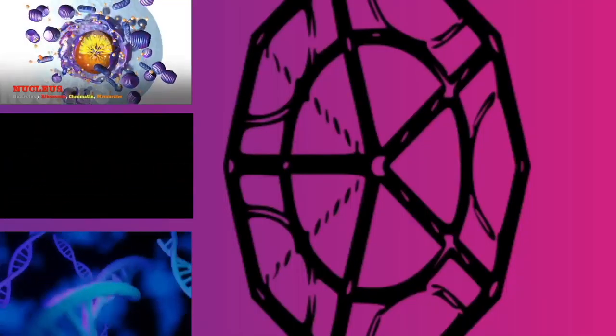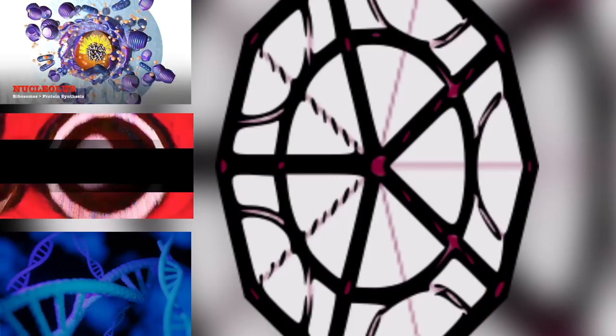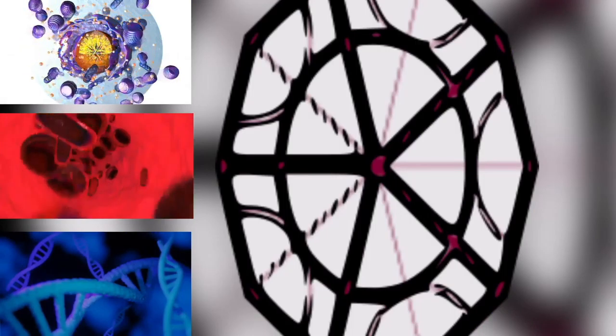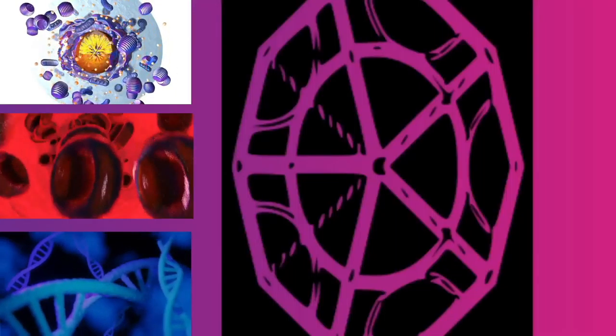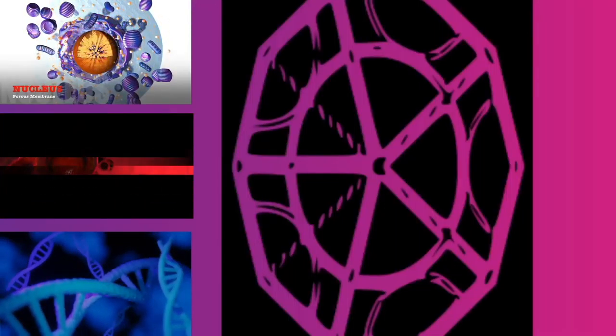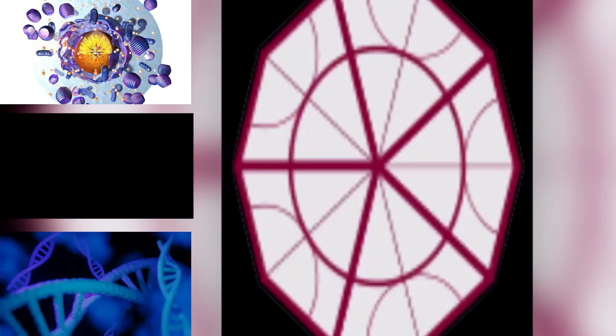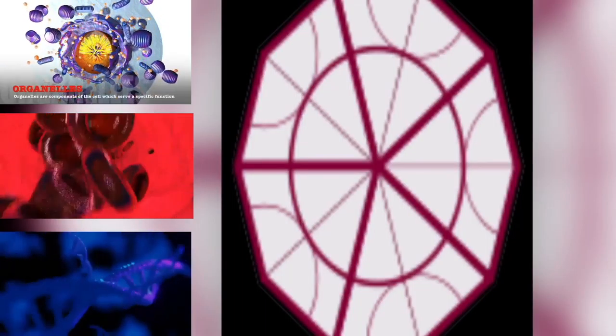Each daughter cell has a complete copy of the genome of its parent cell. The end of cytokinesis marks the end of the M phase. There are many cells where mitosis and cytokinesis occur separately, forming single cells with multiple nuclei.